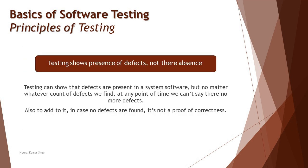The very first principle is: Testing shows presence of defects, but not their absence. Testing is a process where a tester can test the application to find defects. The whole process justifies one thing — testing is an activity by which you can find defects, but no matter how many defects you have found, it does not justify that you have found all defects. For example, if I'm testing an application with 1000 test cases for one year, I still cannot claim I've found all the defects.